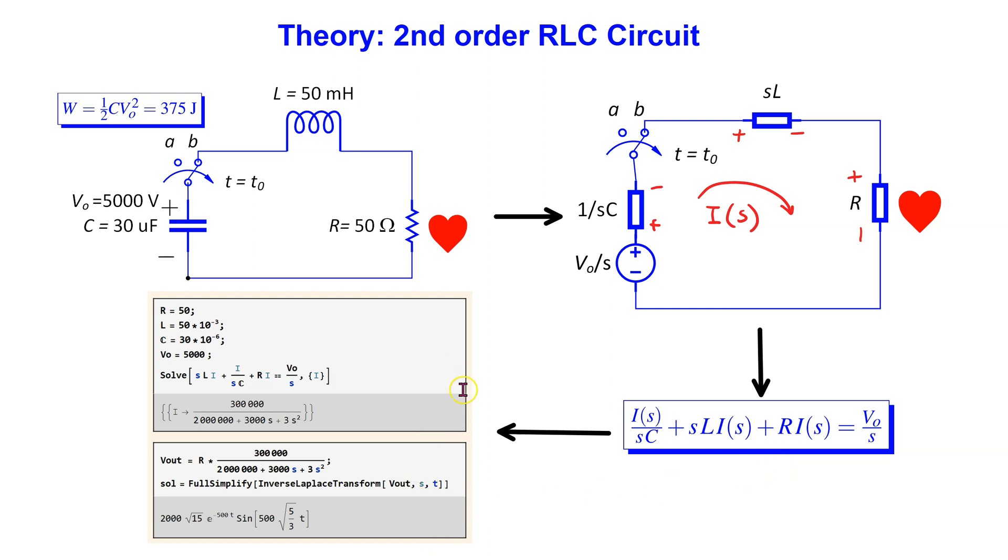We can use Mathematica to efficiently solve this circuit. We use the solve command to do the algebraic manipulation and obtain an expression for the current in the s domain. We multiply the current by the resistance R to get the output voltage across the patient's heart.